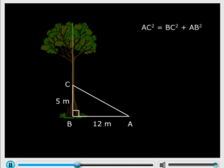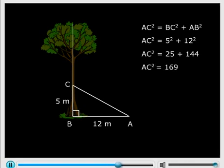Now all we need to do is apply Pythagoras theorem in triangle ABC. So AC squared equals BC squared plus AB squared. Substitute the values: AC squared equals 5 squared plus 12 squared. So AC squared equals 25 plus 144, which is equal to 169.